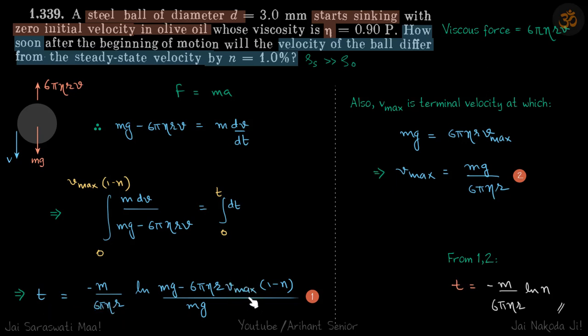Solving this we get t to be this. Now the only thing which we don't know here is vmax. As discussed in the beginning, at terminal velocity the forces are equal. So vmax is terminal velocity at which mg is equal to 6πηR vmax. This gives the value of vmax.